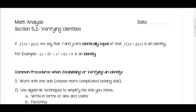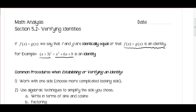We've talked a little bit about this already. So when we talk about verifying identities, let's take a look at something from algebra. So if f of x is equal to g of x, we say that f and g are identically equal, or that f of x equals g of x is an identity. For example, x plus 3 squared is equal to x squared plus 6x plus 9 — we would say that that's an identity.